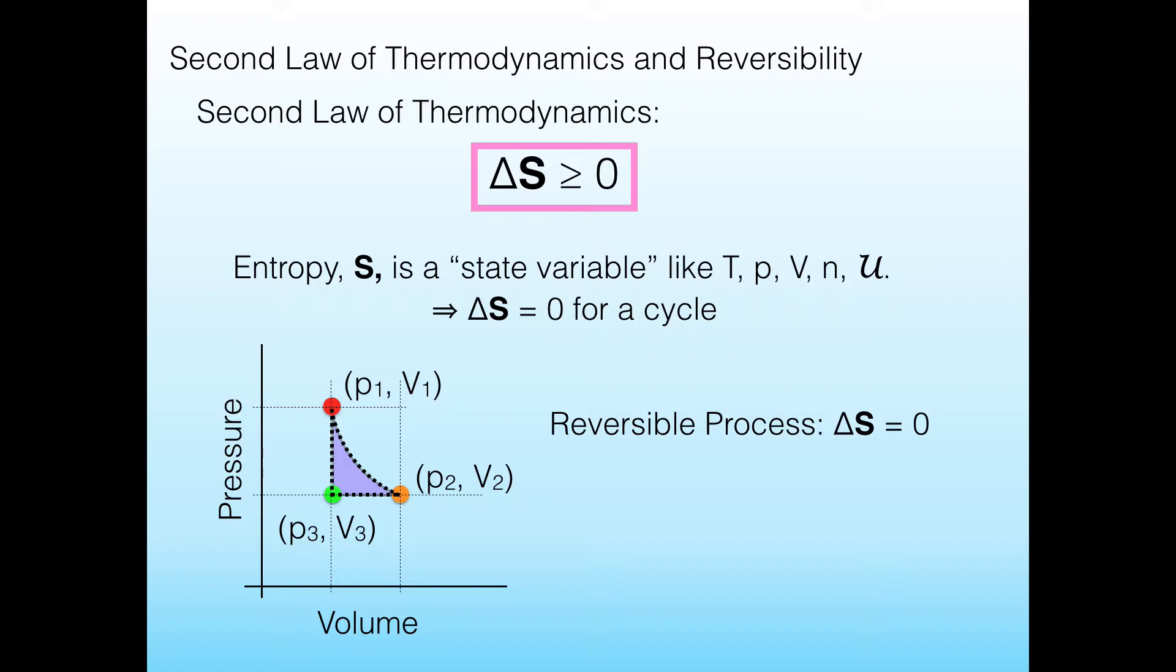So that means that if you're at the red point on this PV diagram, you can do anything you want and move away from that red point. But if you come back to that red point, the entropy at that location will be the same. That's because the number of accessible states or the probability of certain accessible states is dependent on these other variables.